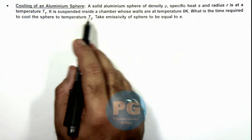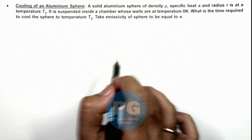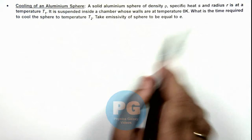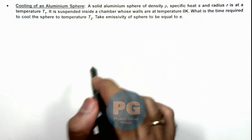It is suspended inside a chamber whose walls are at temperature zero kelvin, and we are required to find the time required to cool the sphere to temperature T2. Emissivity is also given to us as e.